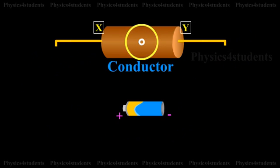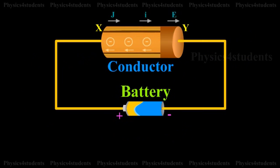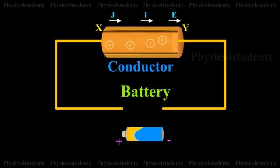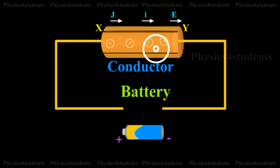Consider a conductor XY connected to a battery. A steady electric field E is established in the conductor in the direction X to Y. In the absence of an electric field, the free electrons in the conductor move randomly in all possible directions. They do not produce current.